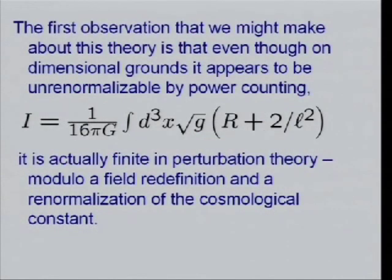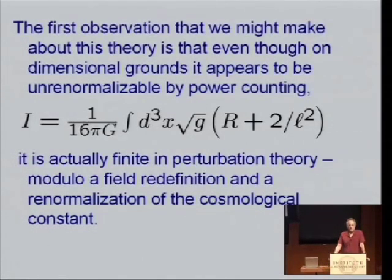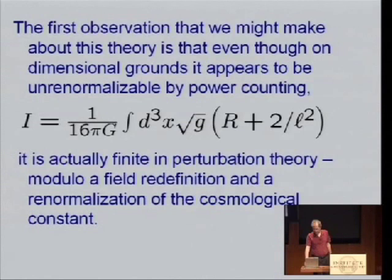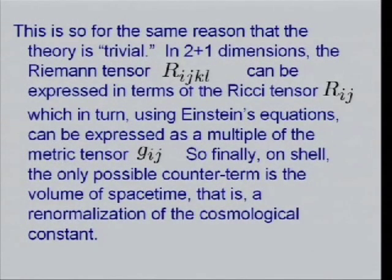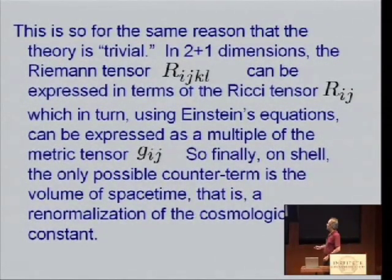The zeroth observation about this theory is that by power counting, it's non-renormalizable, because Newton's constant has dimensions of length in 3 dimensions — a negative power of mass. However, in perturbation theory it's actually finite, modulo field redefinition and a renormalization of the cosmological constant. That's so for the same reason the theory is trivial: in 2+1 dimensions, the Riemann tensor can be expressed in terms of the Ricci tensor, which using Einstein's equations can be expressed in terms of the metric tensor. So on-shell, the only possible counterterm is the volume of spacetime — a renormalization of the cosmological constant.